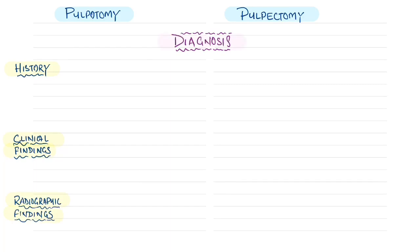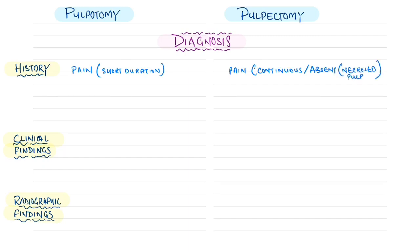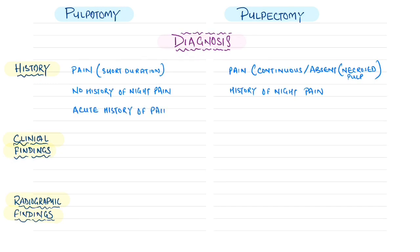While taking history: if pain is of short duration, it is most probably a pulpotomy case; if the history of pain is of continuous duration, or may be absent due to pulp necrosis, it is a pulpectomy case. If there is no history of night pain, it is a pulpotomy case; if there is night pain, it is a pulpectomy case. Acute pain history suggests pulpotomy; chronic pain history suggests pulpectomy.